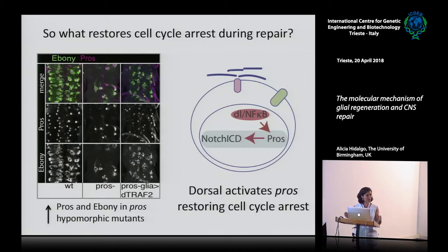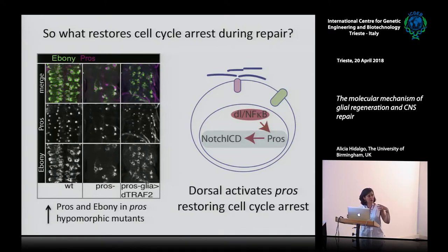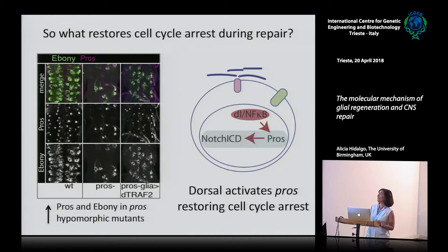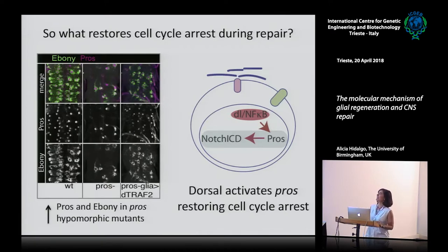The question is: it's important that repair or regeneration don't become tumors. If you have a proliferative response in injury, it's important that this response is contained, because otherwise if cells carry on proliferating you end up with a tumor, not with regeneration. How do cells know when to stop? One mechanism is that Dorsal, which is a transcription factor, in turn activates the expression of Prospero, and Prospero inhibits cell proliferation. This increase in Prospero levels is really important to stop the regenerative response and restore the original quiescence.